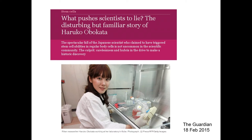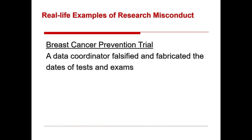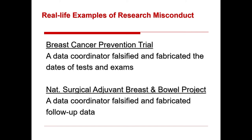This was covered in an overview published in The Guardian. Another example of scientific misconduct involved a breast cancer prevention trial where a data coordinator falsified and fabricated dates of tests and exams because they needed to fill out a sheet and couldn't find the right dates, so they just made them up. In another NIH cooperative group, a data coordinator falsified and fabricated follow-up data from patients. These are all cases that were sent to the NIH for review.